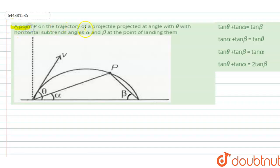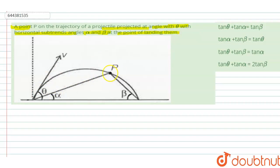In this question, given a point P on the trajectory of a projectile projected at an angle theta with the horizontal, it subtends angles alpha and beta at the point of landing. We have to find the relation between theta, alpha, and beta. Theta is the angle of projection, alpha is the angle when the particle is at point P, and beta is the angle at landing.